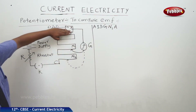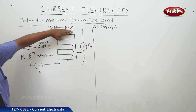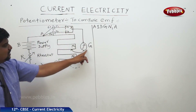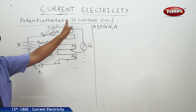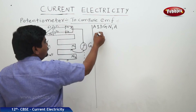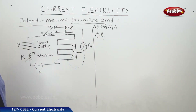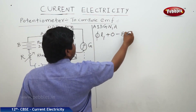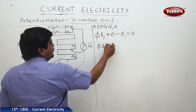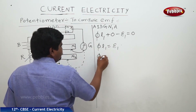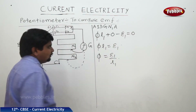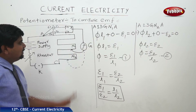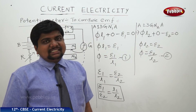To find out the balancing length with respect to E1, where φ (phi) is the potential drop per unit length, the circuit direction is A → 1-3 → G → N1 → A. The potential drop into length equals EMF, so φL1 minus E1 equals zero. Therefore, φL1 equals E1. Similarly, φL2 equals E2. So the ratio of EMFs is directly proportional to the balancing lengths. This is the circuit useful to compare the EMFs of two cells with the help of a potentiometer.